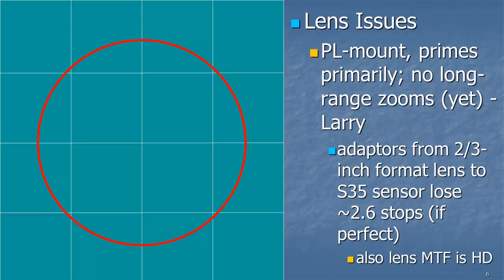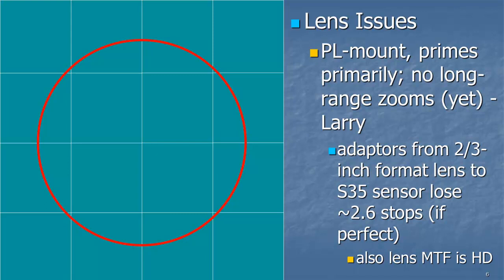So there's also a lens issue. The red circle shows what a lens intended for a two-thirds-inch imager would do, so it's obviously not properly covering the full sensor. And so we use different lenses with different mounts. A PL mount is typical. Prime lenses are fine for a PL mount. There are no long-range zooms yet. Larry is going to talk about one that Canon came up with recently. It's a 20-to-1,